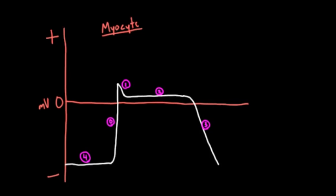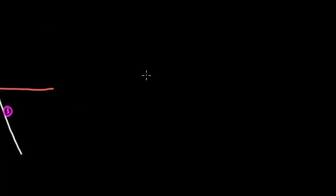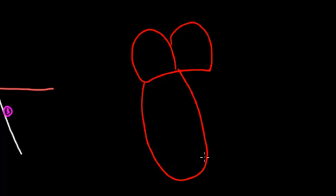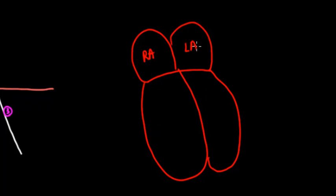Now I want to draw your attention to the heart and not lose sight of what the whole organ looks like. This is our four-chambered heart muscle, with two ventricles down here and two atria up top — the right atrium, left atrium, right ventricle, and left ventricle.